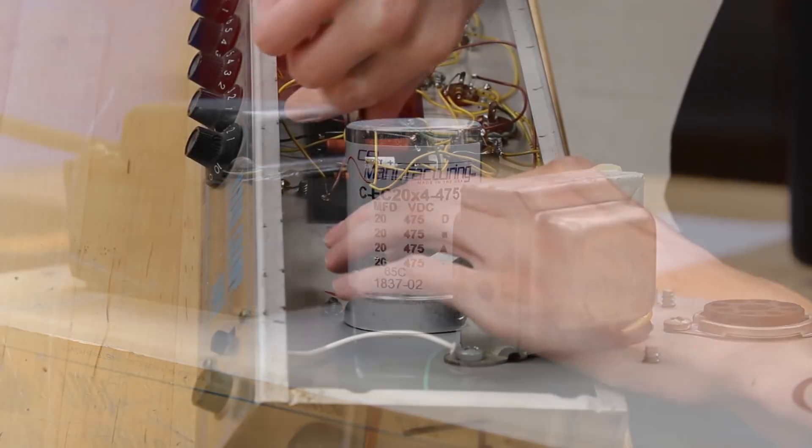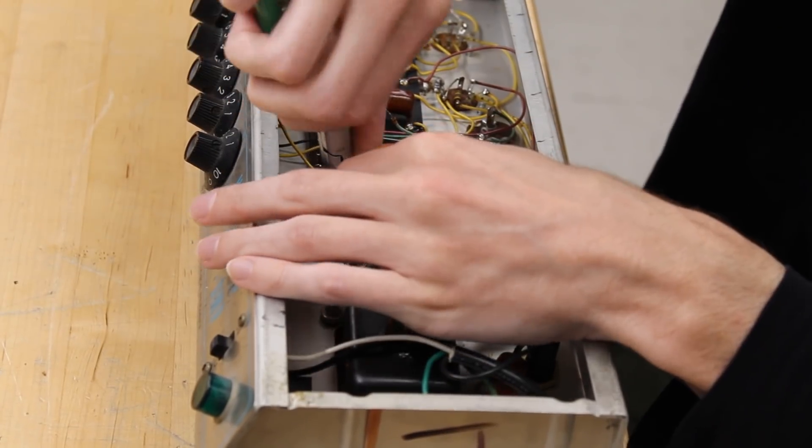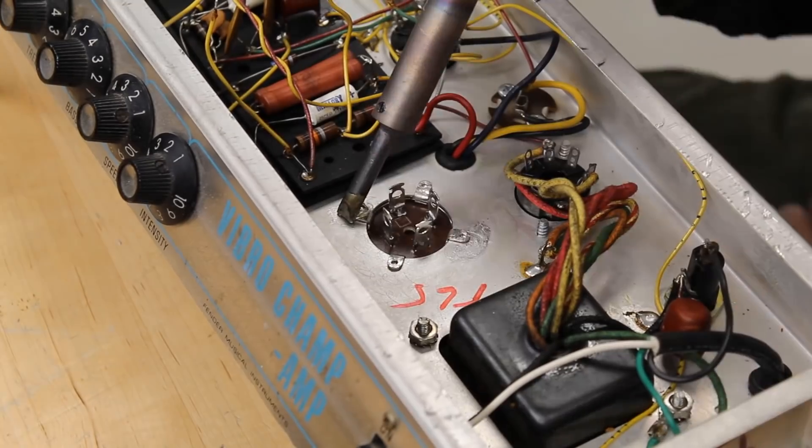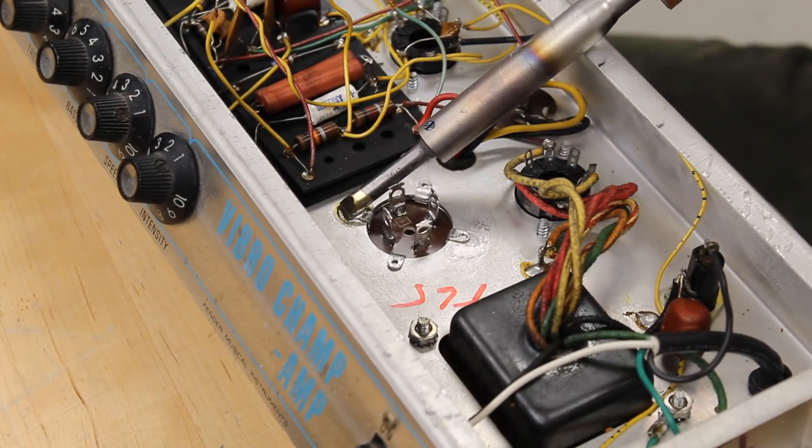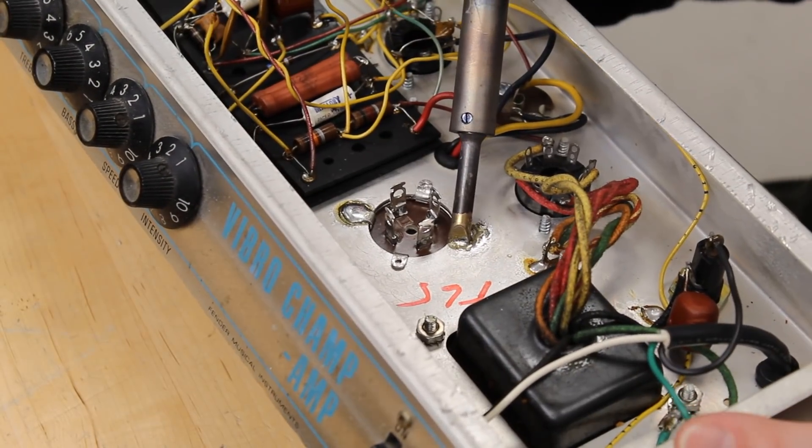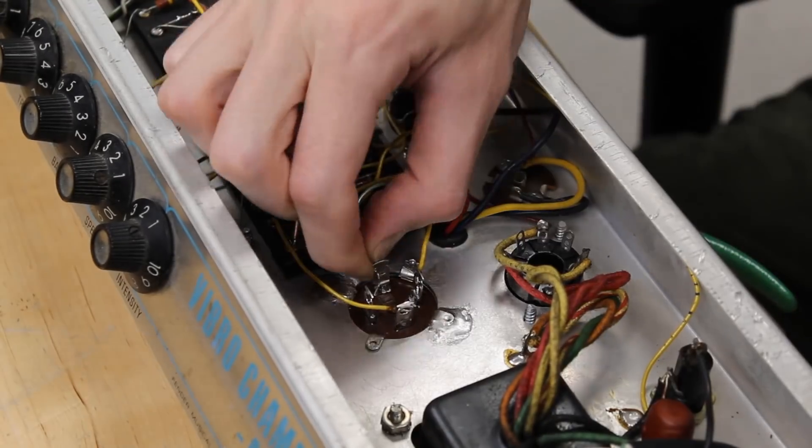After the new cap is in and oriented correctly, we will bend the tabs flush to the chassis and solder them into place with a high watt soldering iron. Then we will solder the wires back into place with a standard soldering iron. It is important to make sure everything is exactly how it was. A misplaced wire could result in permanent damage to the amplifier and potential injury.